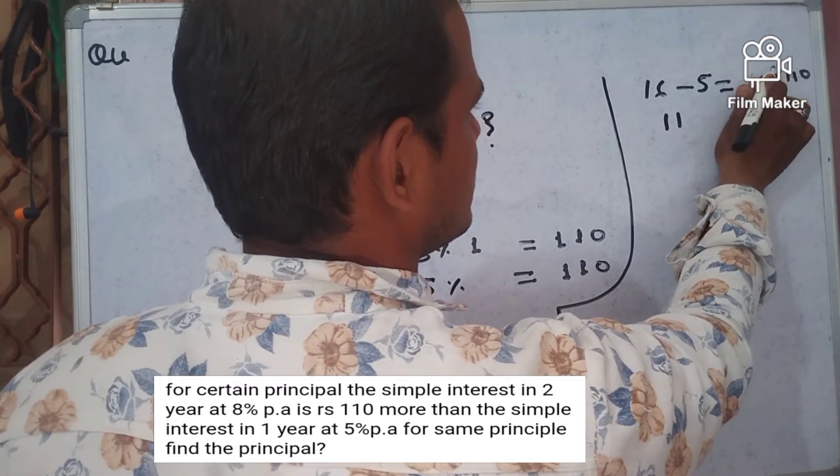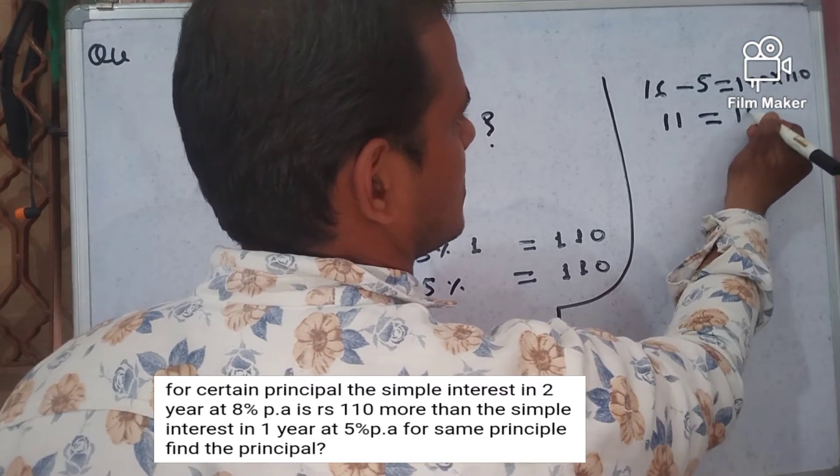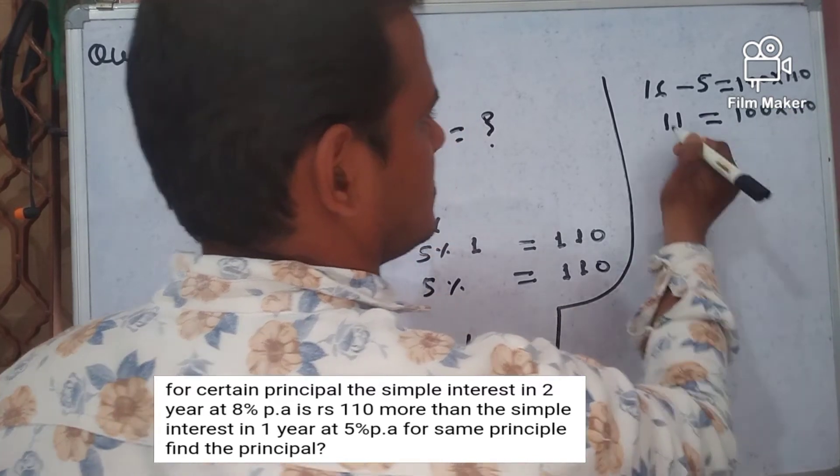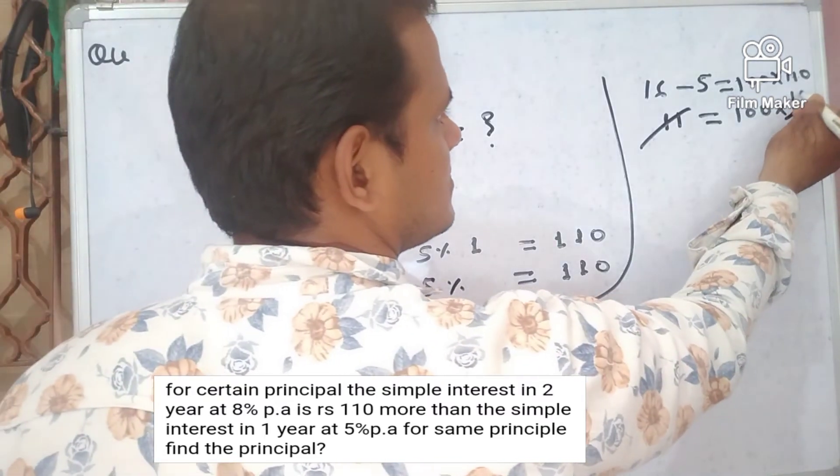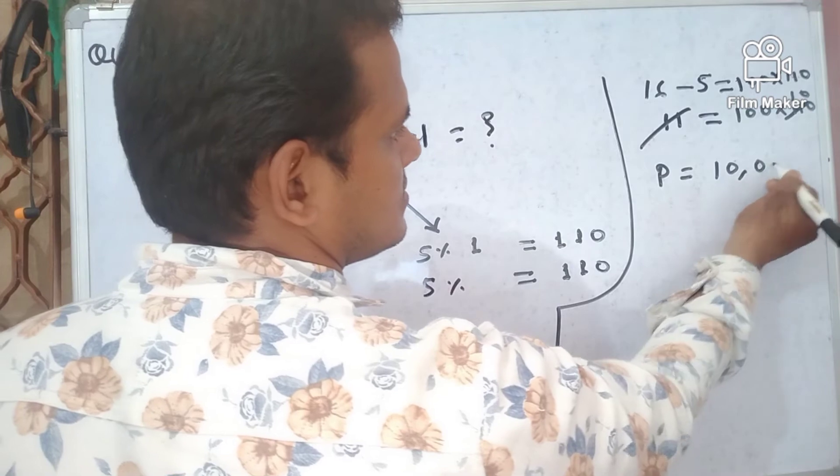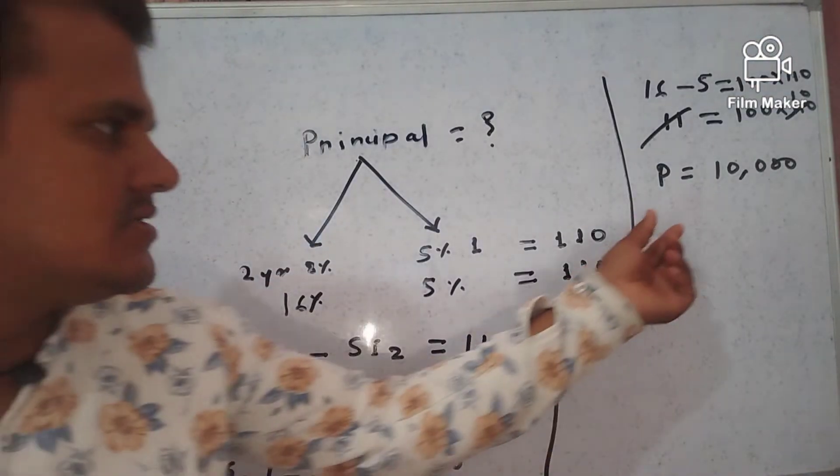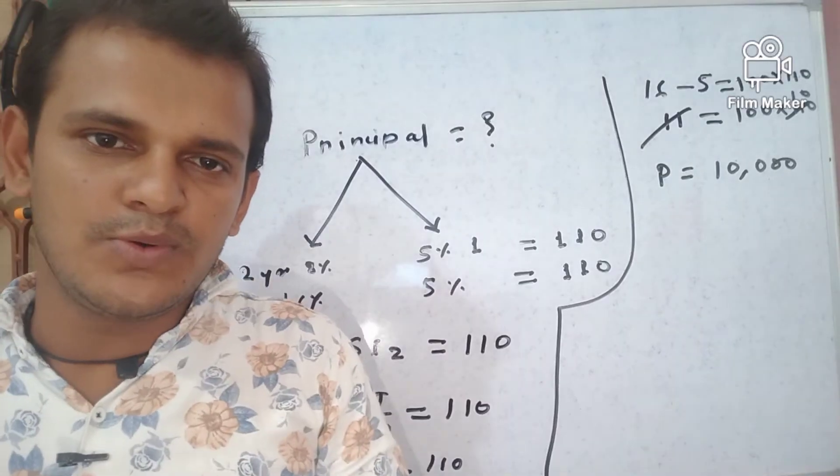100 into 100 into 110, 11 tens are 10. So the principal will be 10,000. So the principal is 10,000.